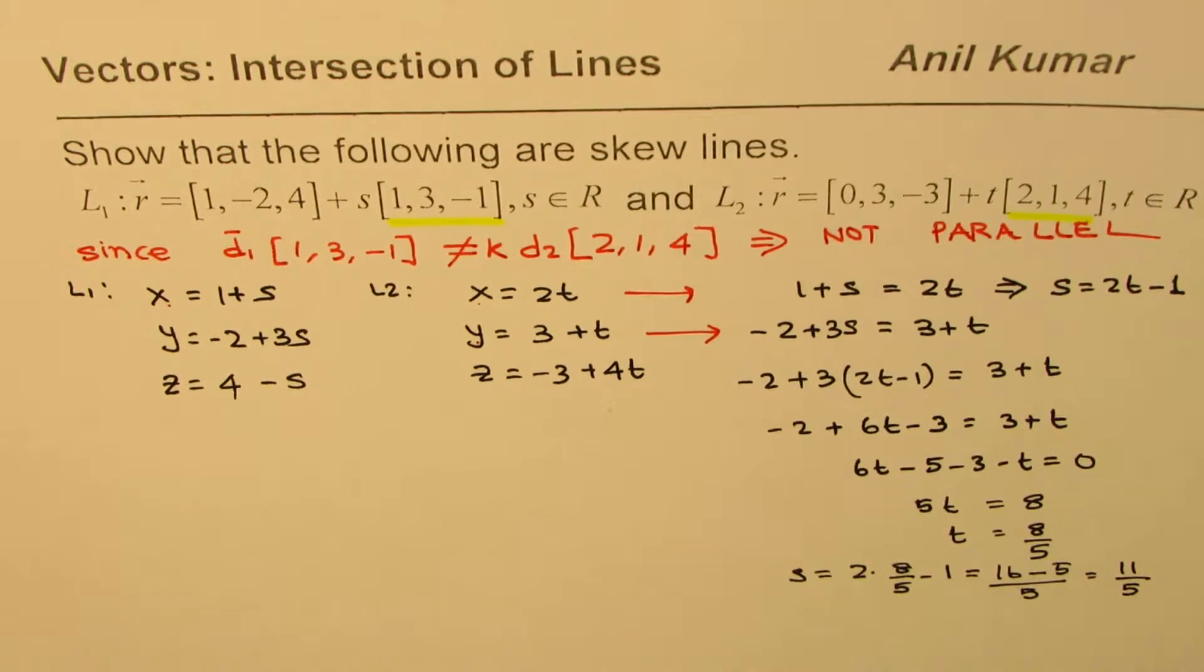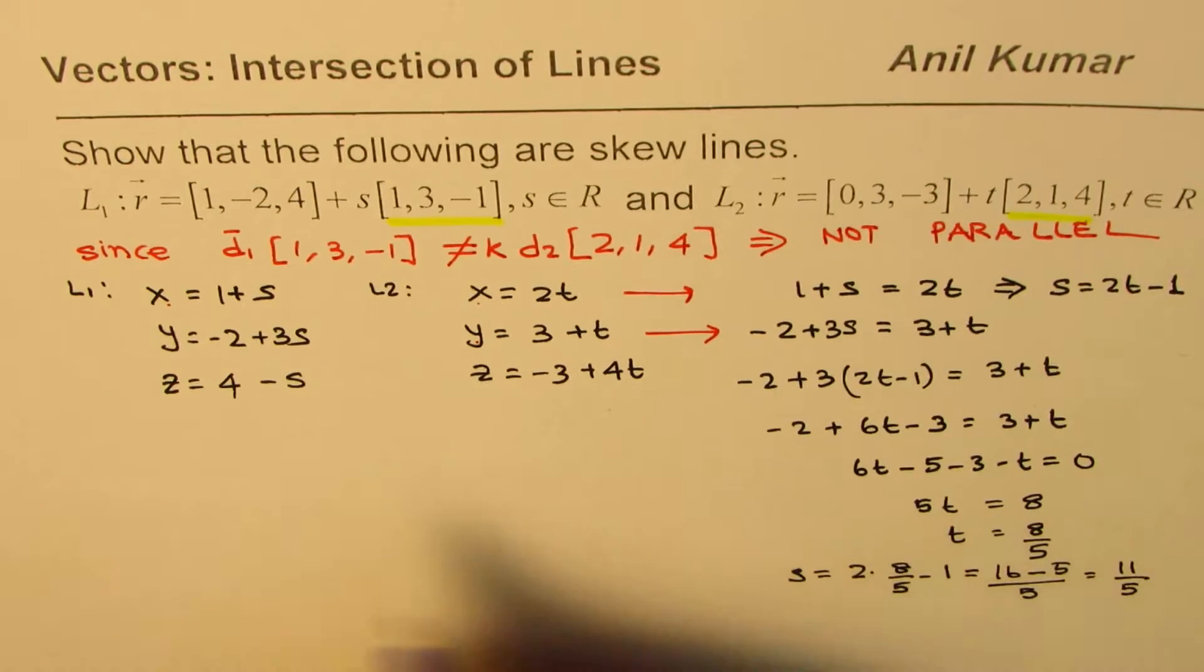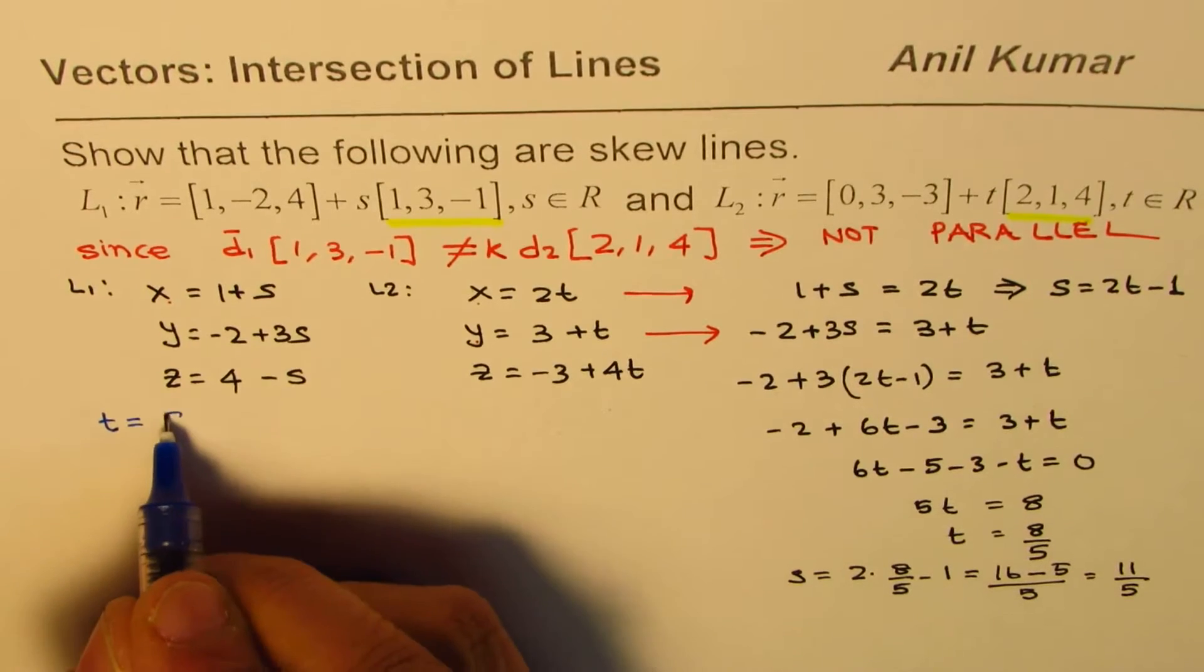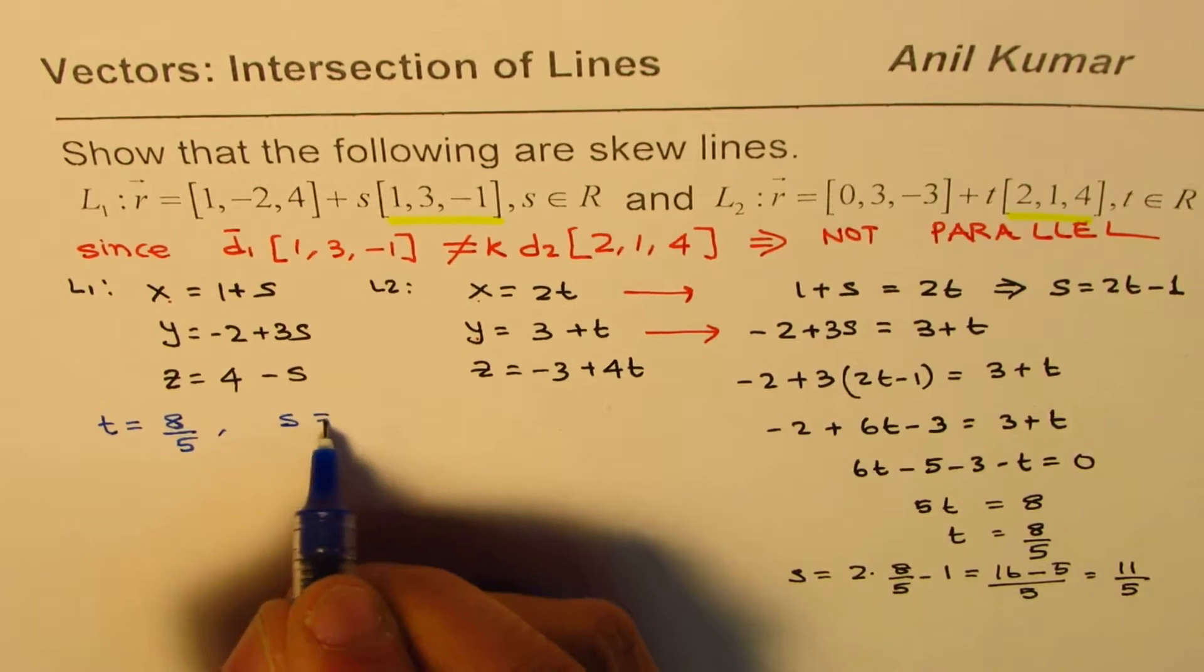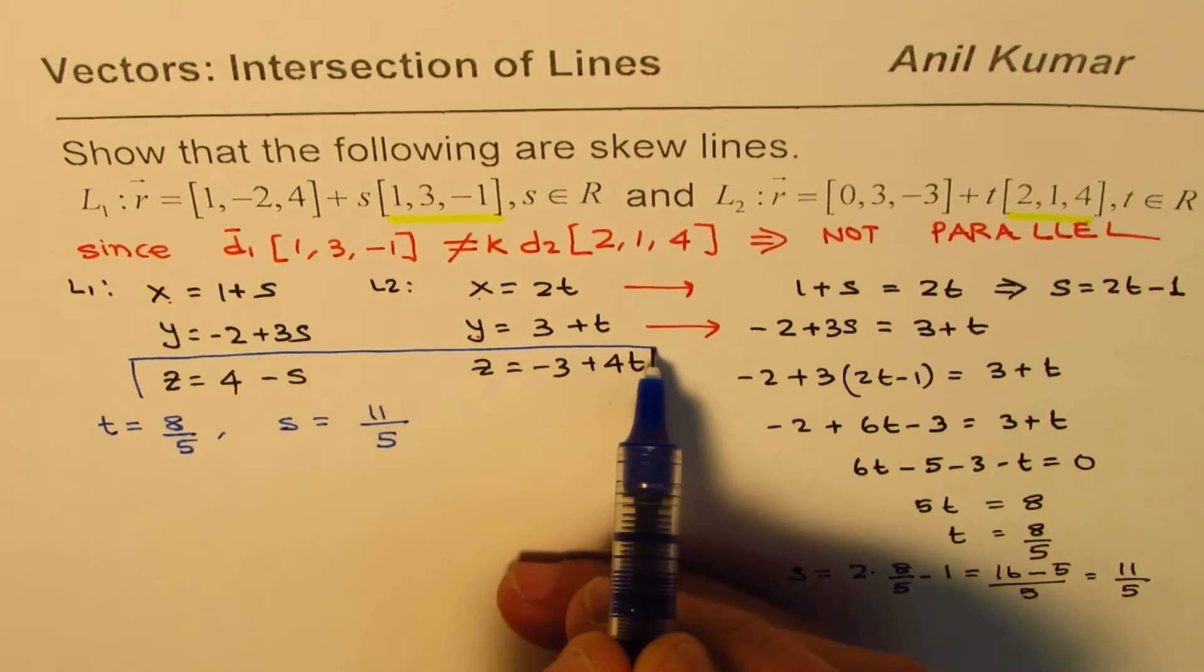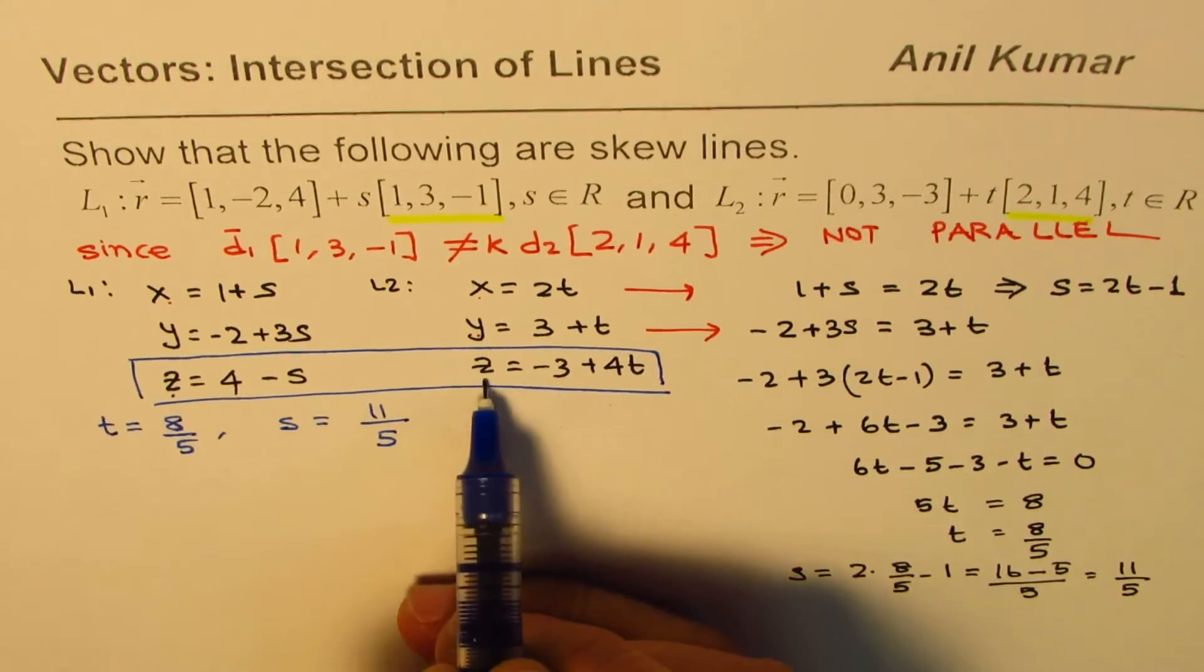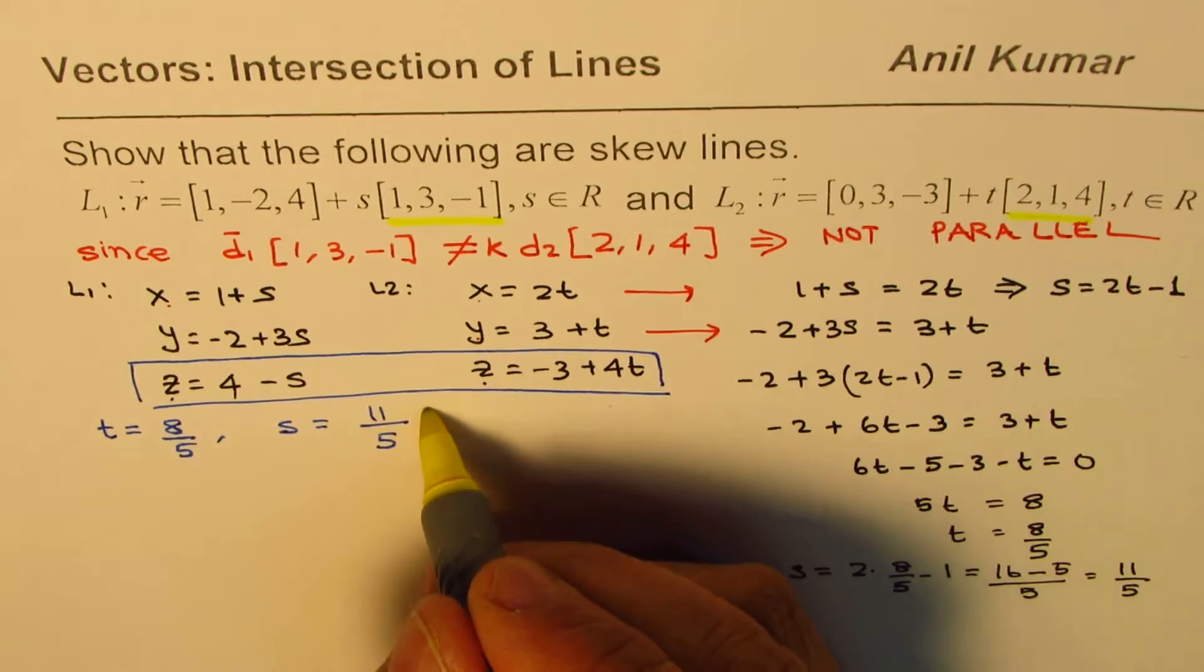We have t equal to 8 over 5 and s is equal to 11 over 5. Now if I substitute these values in the third set of equation which is for z, and if I get same point z, in that case we say that the lines intersect otherwise they don't.